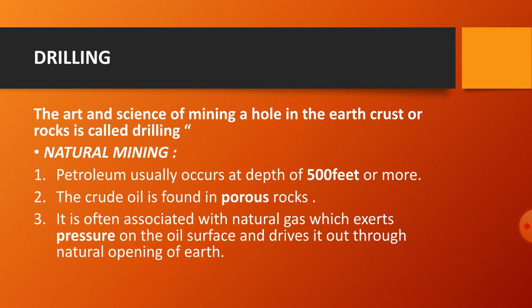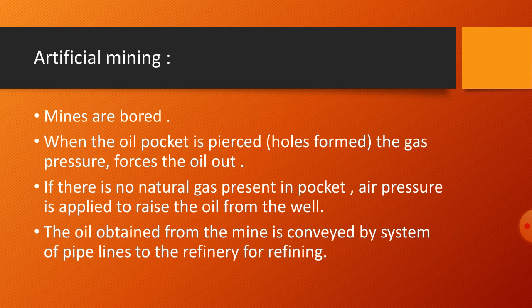In artificial mining, the oil is present at a depth below 500 feet. Mines are bored and oil pockets are pierced. Oil pockets are the areas from where the deposits are collected. When an oil pocket is found, if gas is present, the gas pressure forces the oil out. If there is no natural gas, air is blown in to raise the oil from the well. This oil is then conveyed to the refinery.